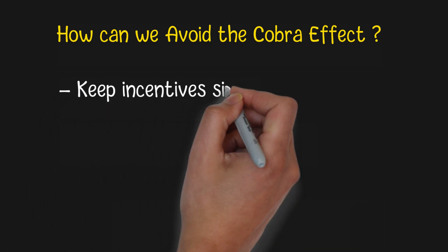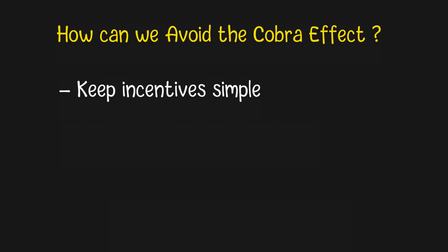One rule of thumb is to keep incentives simple, because complex rules may have more loopholes. You can also consider yourself as a user of the incentive scheme and try to anticipate ways it might be manipulated. This can help adjust your program accordingly.